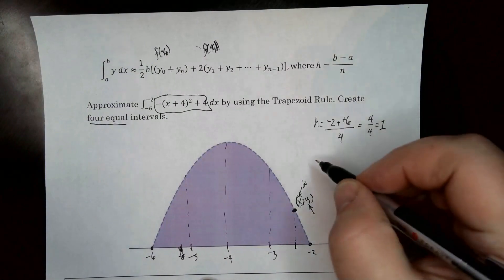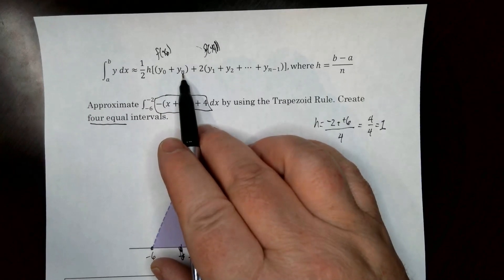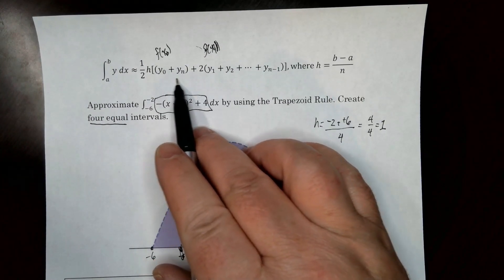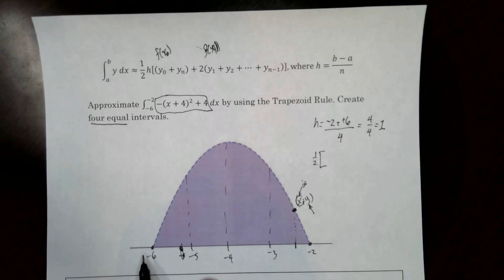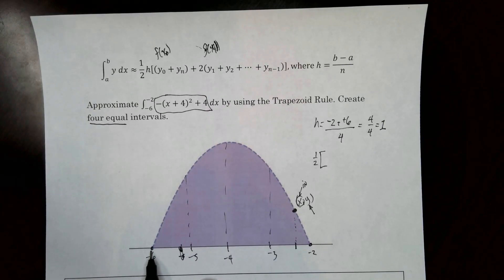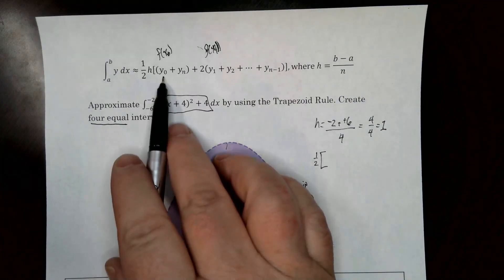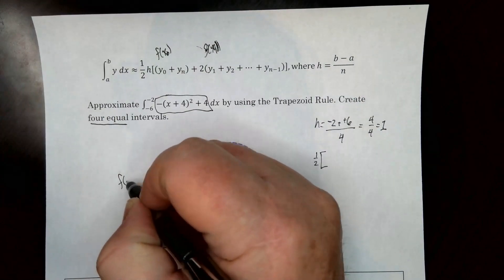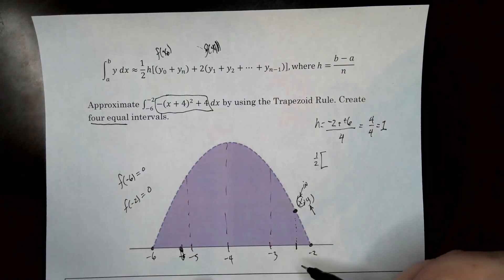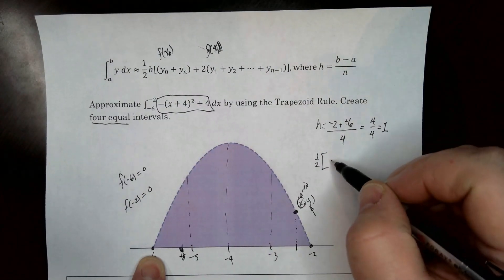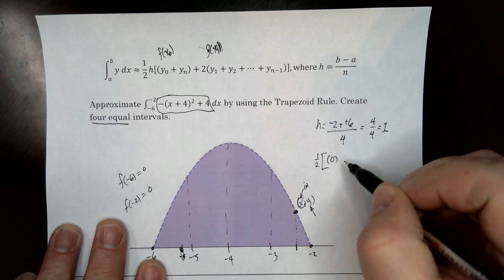So what we're going to have is we're going to have one-half parentheses. Now we have y0 and yn. So that means when I plug in the first y and I plug in the last, or sorry, plug in the first x, plug in the last x. So the first x is negative 6. So I already know because it's on the x-axis, I already know that that is zero, and I know that this is zero. So this is zero and that's zero. Here's what we're saying. We're saying f of negative 6 is equal to zero. We're saying f of negative 2 is equal to zero. And the reason I know that is because that's where they cross. So zero and zero. So I'm not even going to write that part. I guess I will. That's zero. Plus two.